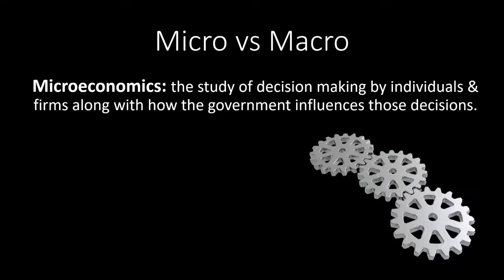Now let's look at microeconomics, which is the study of decision-making by individuals and firms, along with how the government influences those decisions. You can think of this as each individual gear. When the individual gears are moving around, all these little microeconomic decisions are creating the overall environment for macroeconomics.